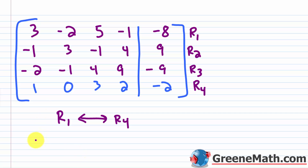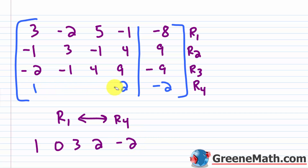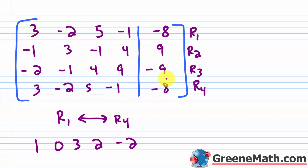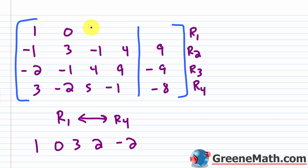After the swap, row 1 becomes: 1, 0, 3, 2, negative 2. Row 4 takes the old row 1: 3, negative 2, 5, negative 1, negative 8. Now that I have a 1 in the top position, getting zeros below is straightforward. I'll do multiple rows at once to speed up the process.